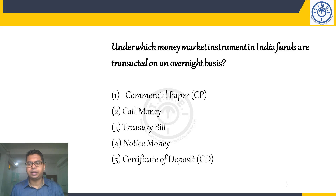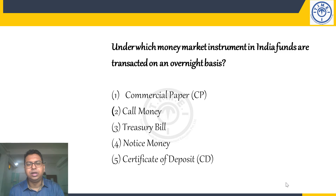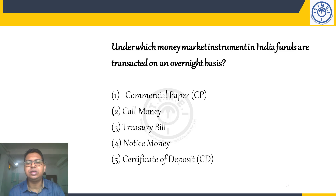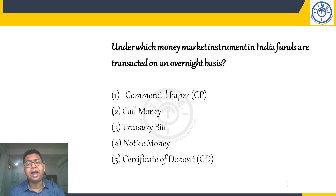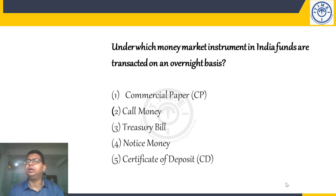Under which money market instrument in India are funds transacted on an overnight basis? Money market is a market where financial instruments of tenure less than one year are traded. The participants in money markets are banks, NBFCs, primary dealers, central governments, and state governments. The main purpose of the money market is to overcome short-term liquidity shortfalls.